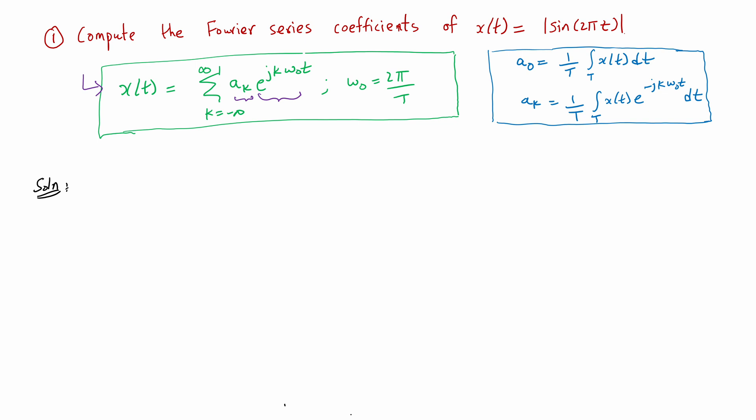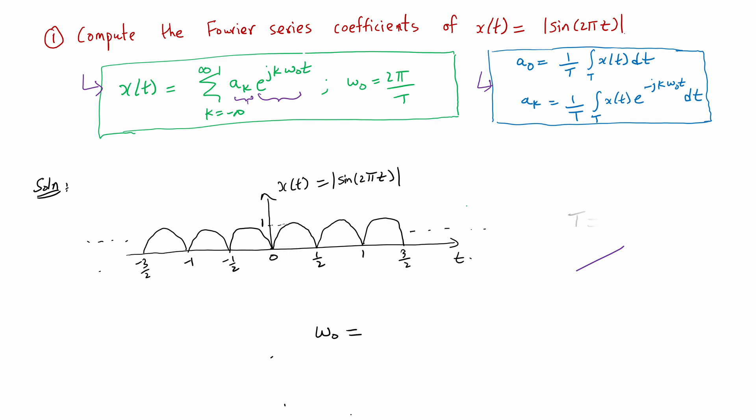Before we get started with computing the Fourier series coefficients, let's first sketch the signal x(t) so we get an idea of what the fundamental time period is. x(t) = |sin(2πt)| is non-negative always, with a maximum value of 1, reached at t = 1/4 and t = 3/4, etc. By looking at the signal, you can easily see that the fundamental time period is 1/2, and the fundamental frequency ω₀ is 2π divided by 1/2, which is 4π.